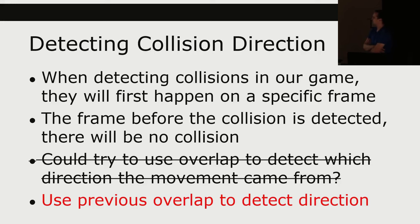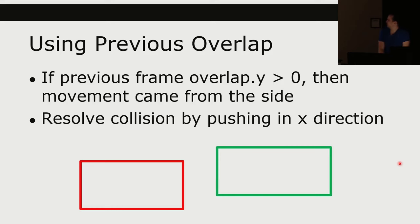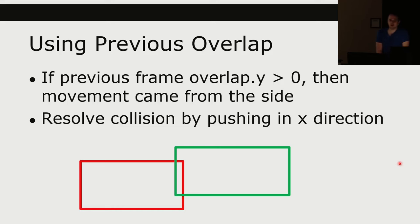At any given time, we store the overlap on this frame and also look at the overlap from the previous frame. If the previous frame's overlap y is greater than 0 — if I can draw a line between the two rectangles vertically — then the movement came from the side. Because if we're overlapping in y, we couldn't have come from y. So if this is true, we resolve the collision by pushing in the x direction. If we detect a y overlap on one frame but no x overlap, then on another frame we do have both, we know it came from the x direction and push in x.